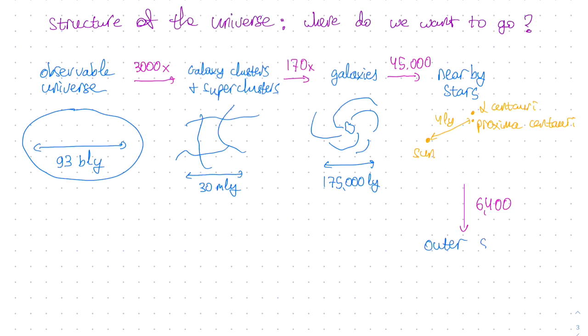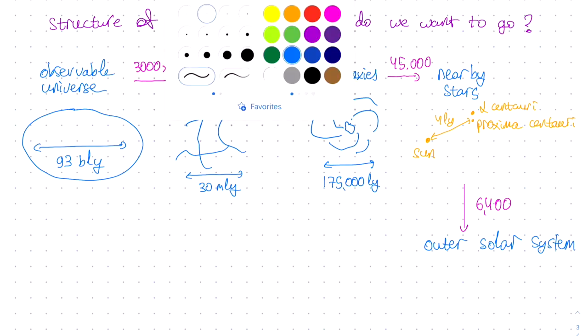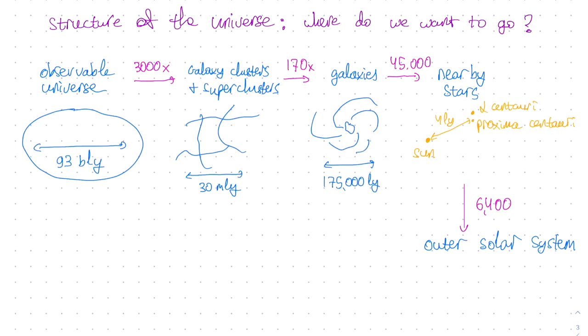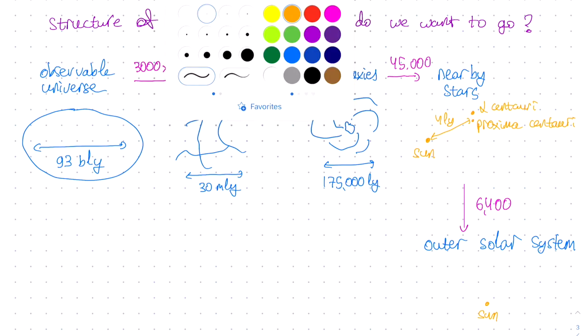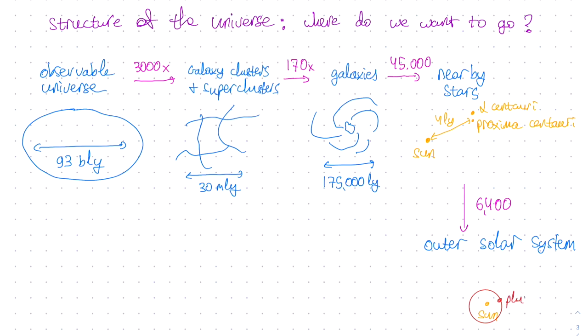Now, if we zoom in another 6,400 times, we will be able to resolve the outer solar system. So let's sketch a plot of what that looks like. So here in the center is our Sun. Orbiting the Sun is Pluto at a distance of five and a half light hours. That is, it takes five and a half hours for light to travel from the Sun to Pluto. And at a distance of nine and a half light hours is the furthest human spacecraft, Voyager 1.